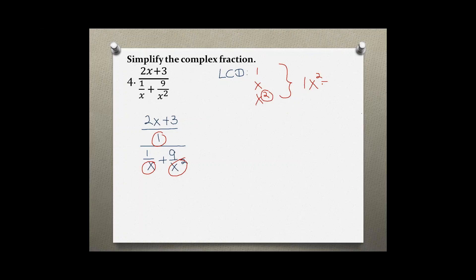So x squared would be my least common denominator in this problem. Now I have to multiply each part by the least common denominator, so x squared, and then down here x squared and x squared.